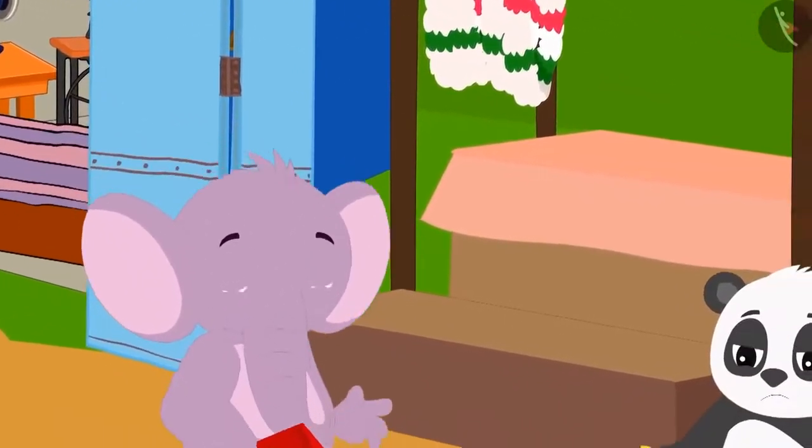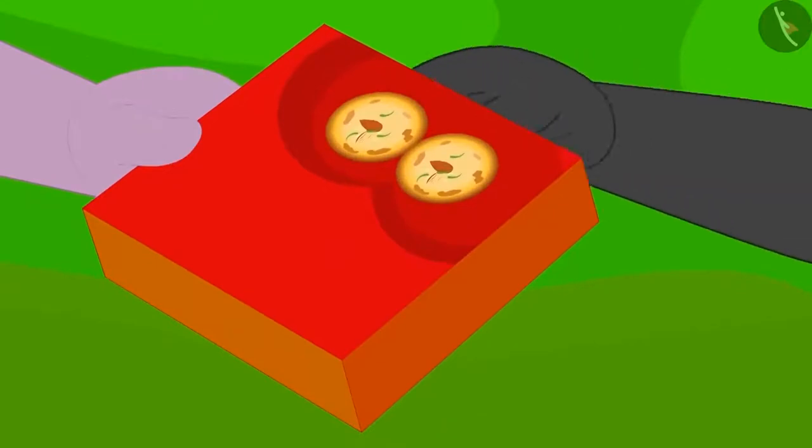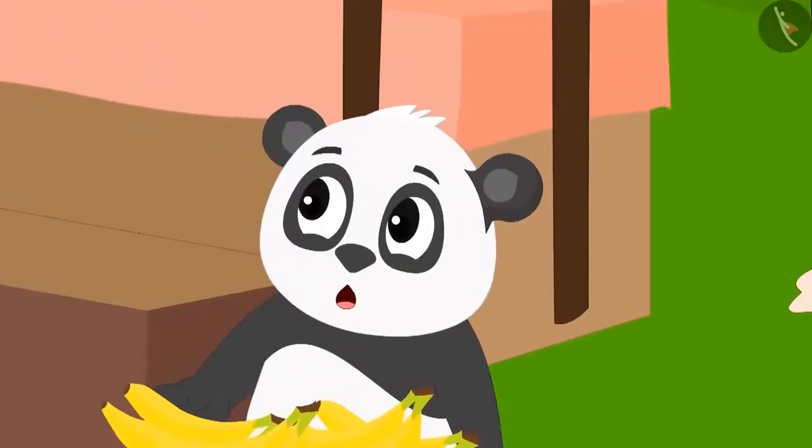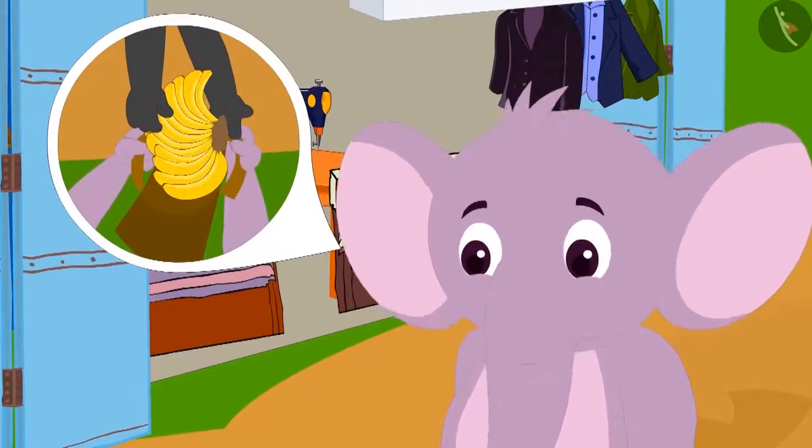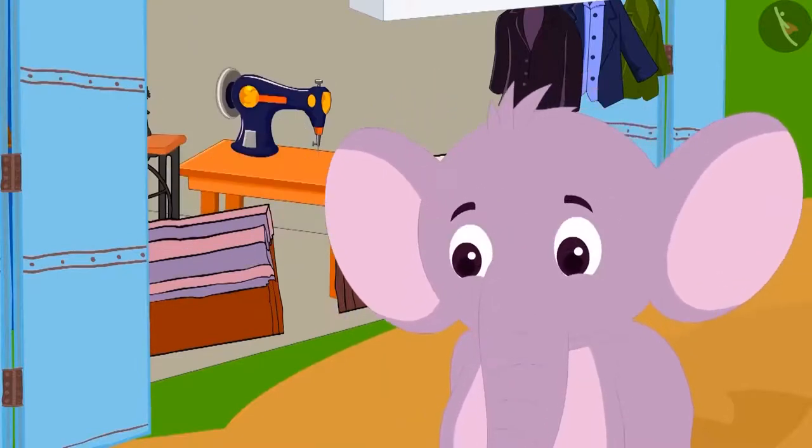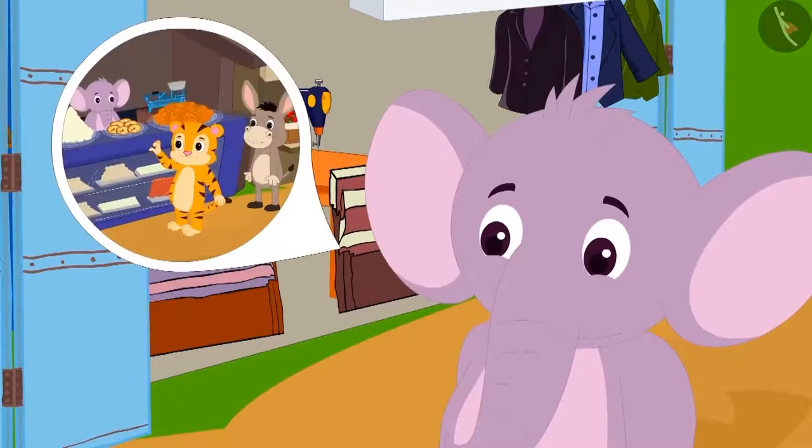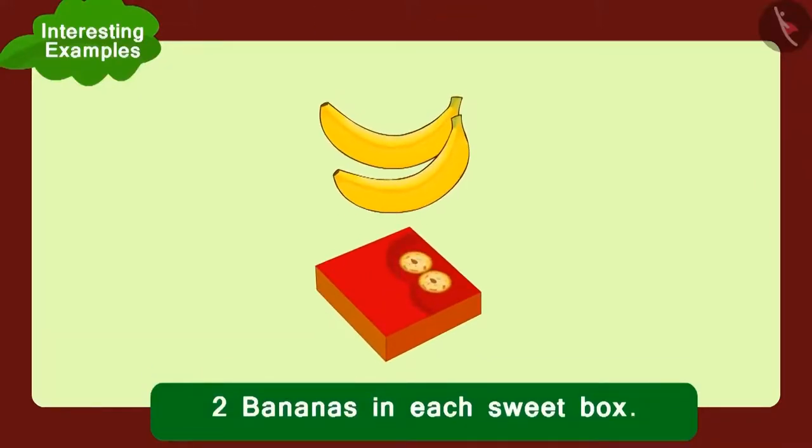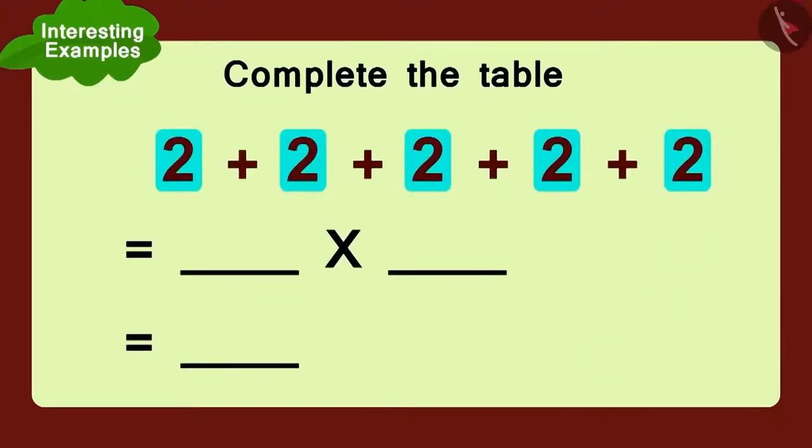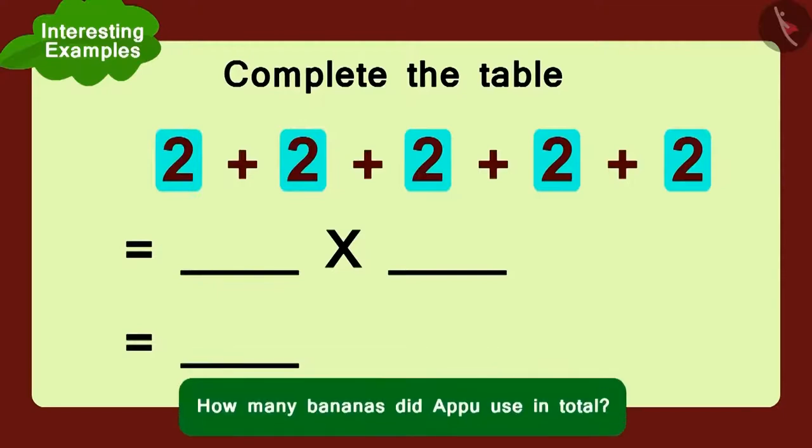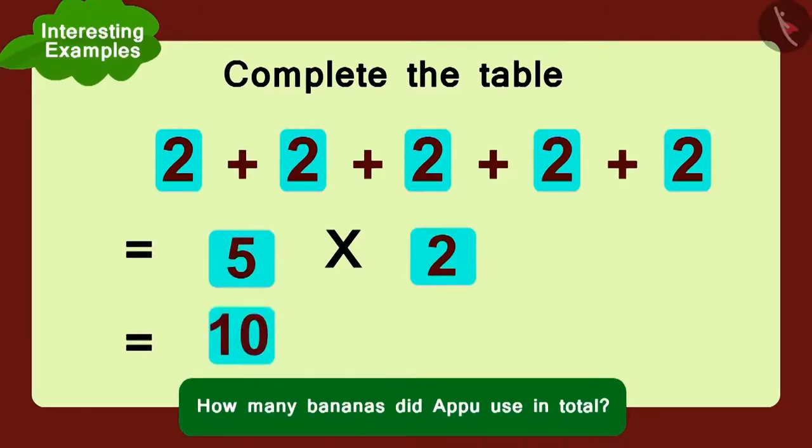Just then, Appu came to his cart and gave Golu a sweet box and thanked him. Golu was confused. Then, Appu told him that he had made a sweet from the twelve bananas that he bought from Golu. And everyone liked the sweet a lot. And now, there are so many people visiting his shop today. Appu used two bananas for each sweet box and he made five such boxes. Can you complete this table and tell how many bananas did Appu use in total? This is absolutely correct answer. Appu used five multiplied by two. That is ten bananas.